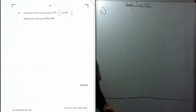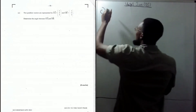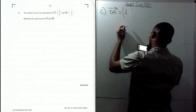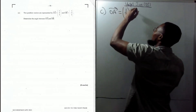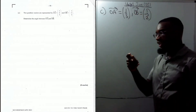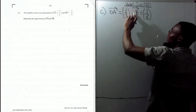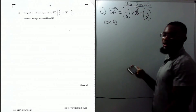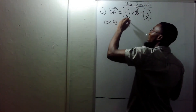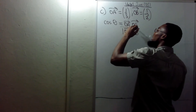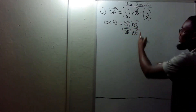Part C says: two position vectors are represented by OA and OB — determine the angle between OA and OB. Vector OA is (1, 2, 3) and vector OB is (1, −3, 2). To find the angle, we use: cos θ equals OA · OB over the magnitude of OA times the magnitude of OB.